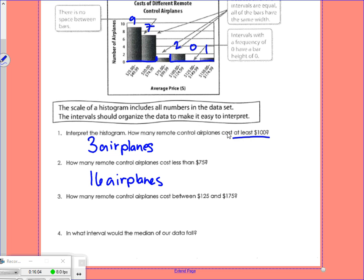Number three, how many remote control airplanes cost between 125 and 175? And in that interval, there's only one airplane.